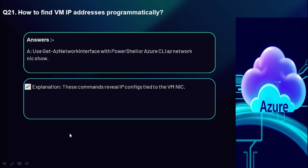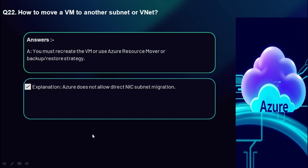Question 21: How do you find VM IP addresses programmatically? Use Get-AzNetworkInterface with PowerShell or 'az network nic show' with Azure CLI. These commands reveal IP configurations tied to the VM NIC.